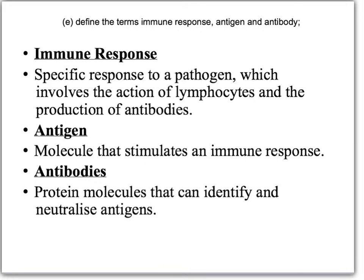An antigen is a molecule that stimulates an immune response. These are molecules — proteins or glycoproteins — that sit on the cell surface membranes of cells or viruses, which our body recognises as being foreign when they invade our tissues and elicit an immune response. We have antigens on our own cells, but our immune system recognises those as belonging to us and does not elicit an immune response. Immune responses only occur to foreign cells — be they bacterial cells, viruses, protozoans, or cells from another individual. Hence the problem with tissue rejection following transplant surgery.